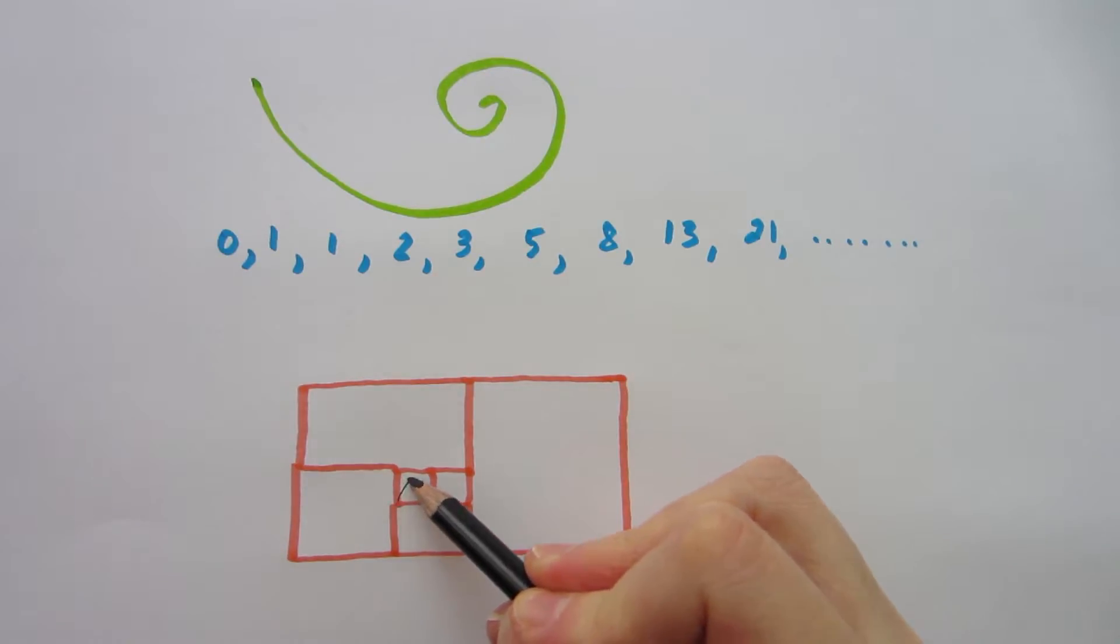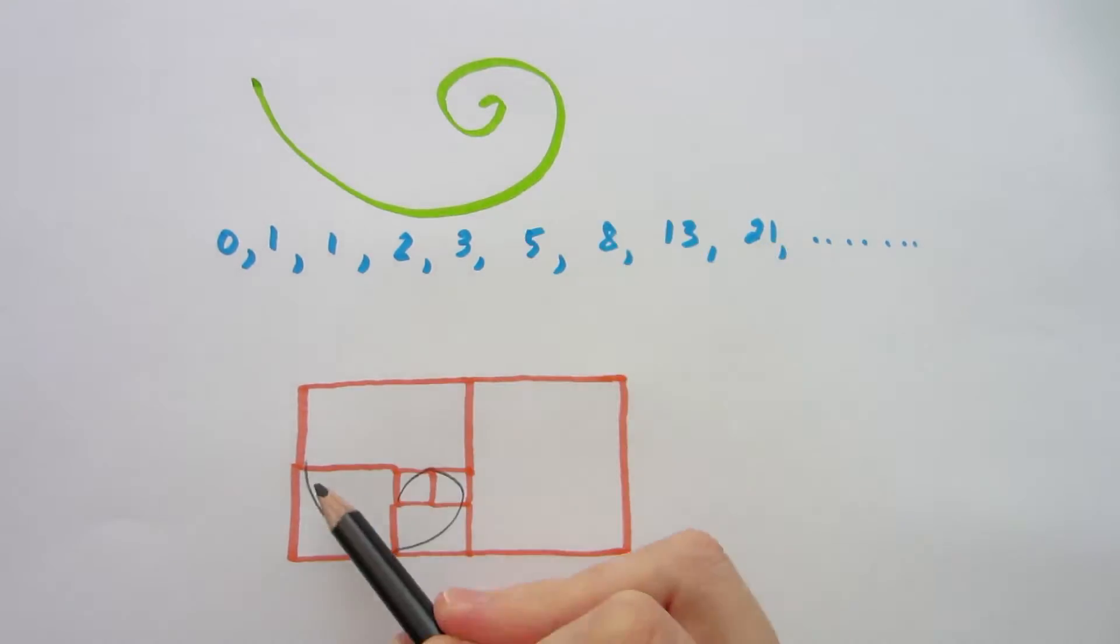Then, beginning in the first square, draw an arc like so, making sure to pass through each of the vertex of each square. And here we have the golden spiral, known as the Fibonacci logarithmic spiral that underlies beauty in the world around us.